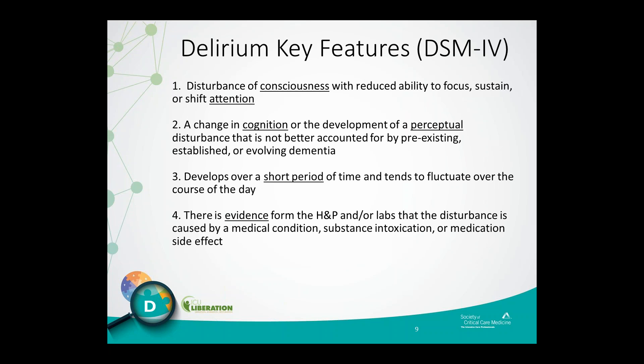While there's a new version of the DSM out, the key features of delirium really haven't changed. To be diagnosed as delirious, patients must display a disturbance in consciousness and a reduced ability to focus, sustain, or shift attention — attention is key to accurate detection. They also often experience a change in cognition or perceptual disturbances not better accounted for by pre-existing dementia. Delirium often develops over a short period of time, with classic fluctuation in mental status, and there is evidence that the disturbance is related to a medical condition, substance intoxication or withdrawal, or a medication side effect.